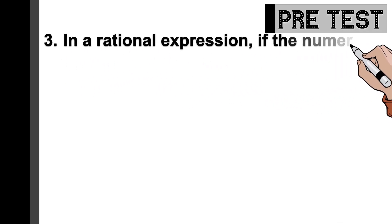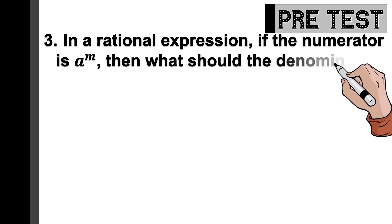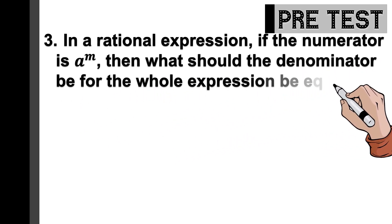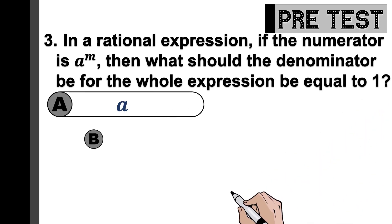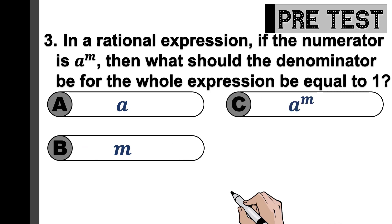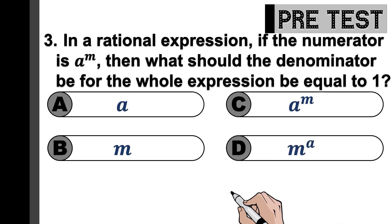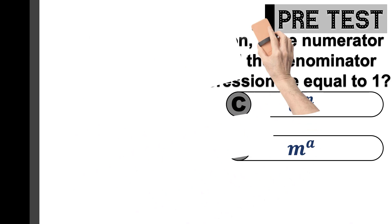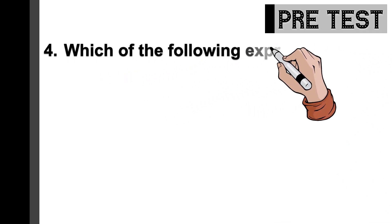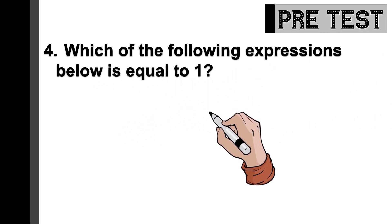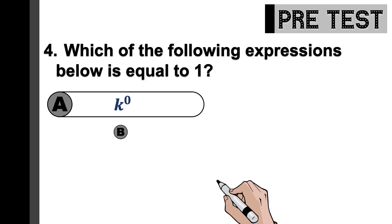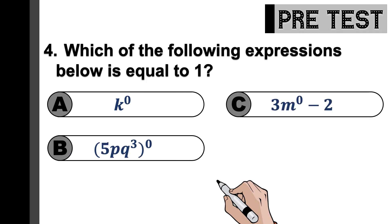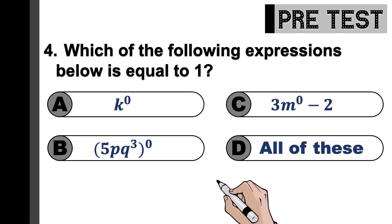Question number 3. You have 5 seconds for this. Time is up. Let's have item number 4: Which of the following expressions below is equal to 1? Is it A, k to the power of 0? B, is it the expression of 5pq cubed to the power of 0? Or C, is it 3 times m to the power of 0 minus 2? Or is it D, all of these?